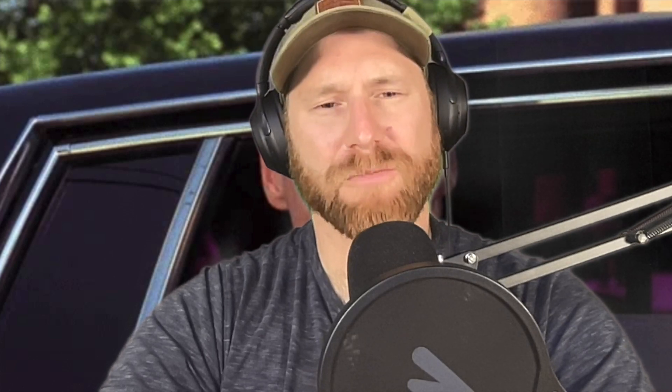These ideas will make a difference in workflows and development life cycles, and on data teams it'll actually make a huge difference. It's not just the code you write that gets deployed — it's all the infrastructure around that — and it can make rolling out changes less buggy and a lot easier. These three points come down to: automated testing, automated code deployments, and clean code and standards.